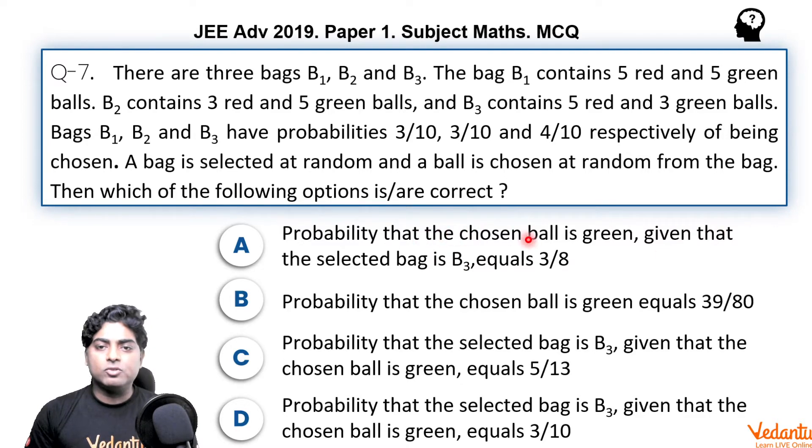Probability that the chosen ball is green given that selected bag is B3. So it is nothing but checking the bag B3 only. We need not to check B1 or B2 here. Equals 3 by 8. We will see. Option B, probability that the chosen ball is green equals 39 by 80. So green ball can come from bag 1, bag 2 or bag 3. We will have to go through total probability theorem here.